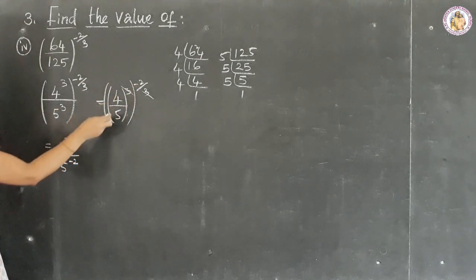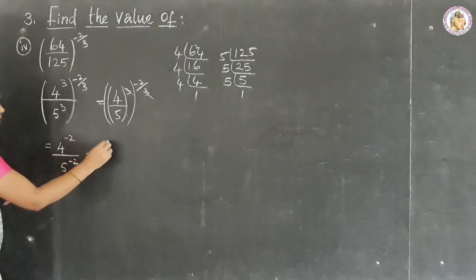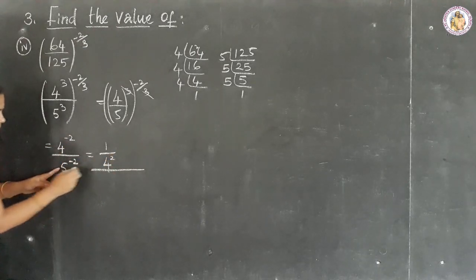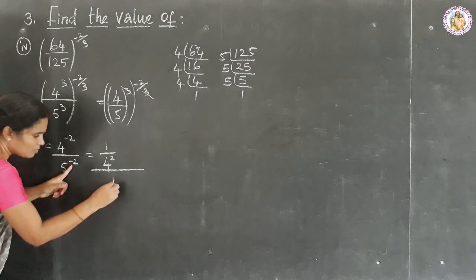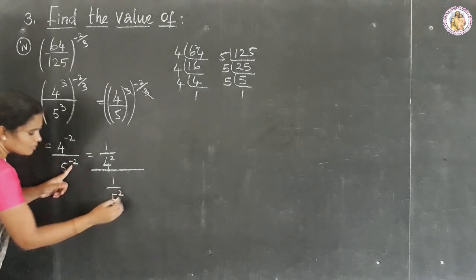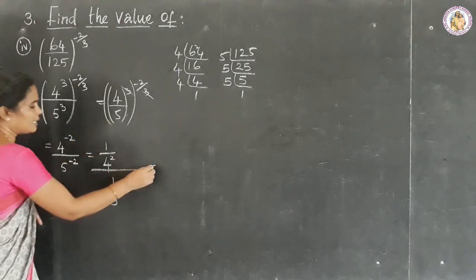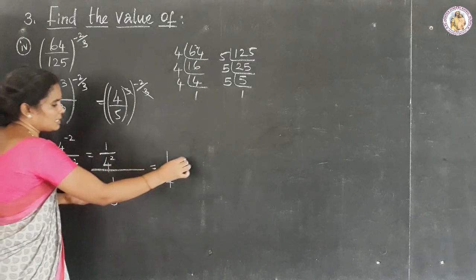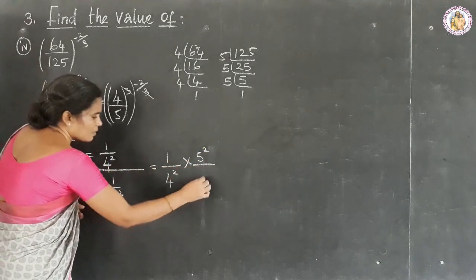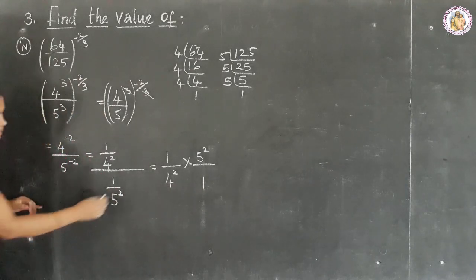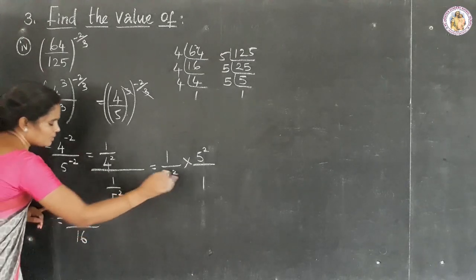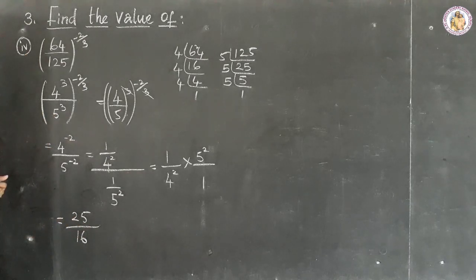The minus 2 is common to numerator and denominator. Writing 4 to the power of minus 2 as 1 by 4 squared, and 5 to the power of minus 2 as 1 by 5 squared. Dividing (1 by 4 squared) by (1 by 5 squared) means multiplying by 5 squared over 1. So 5 × 5 equals 25 in the numerator, and 4 × 4 equals 16 in the denominator. Therefore, (64 by 125) to the power of minus 2 by 3 equals 25 by 16.